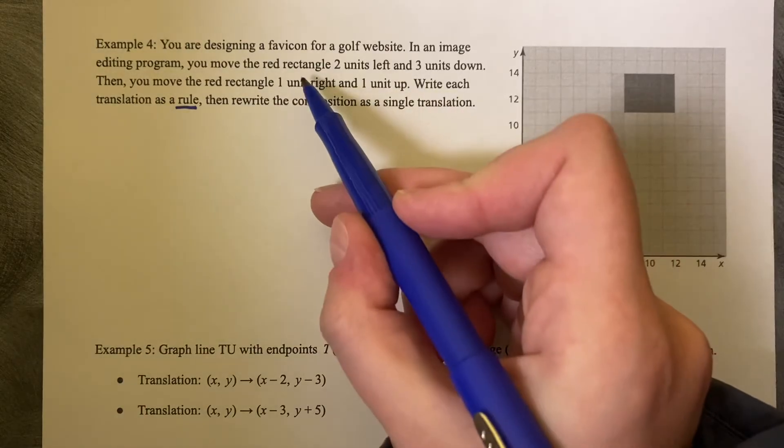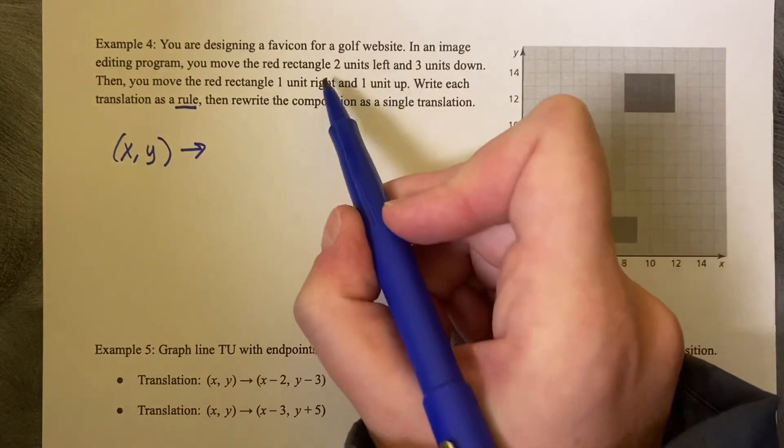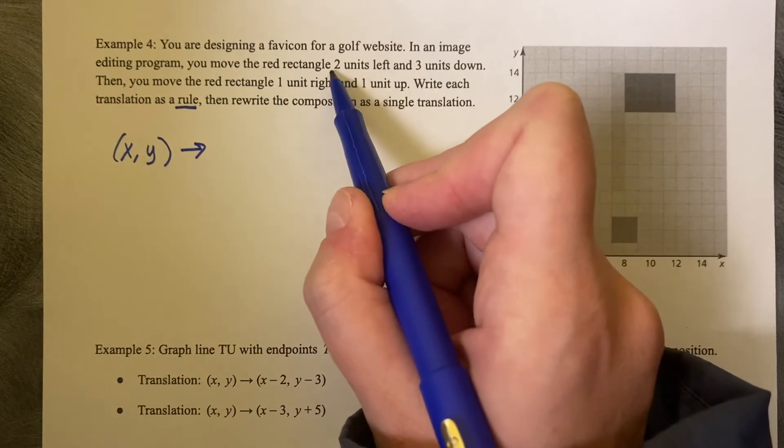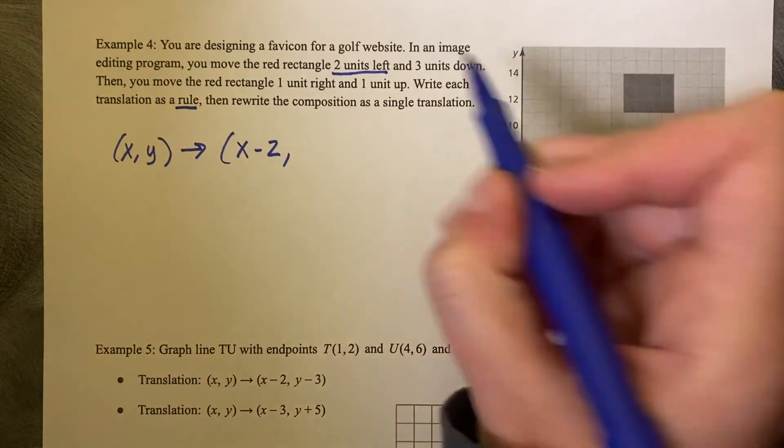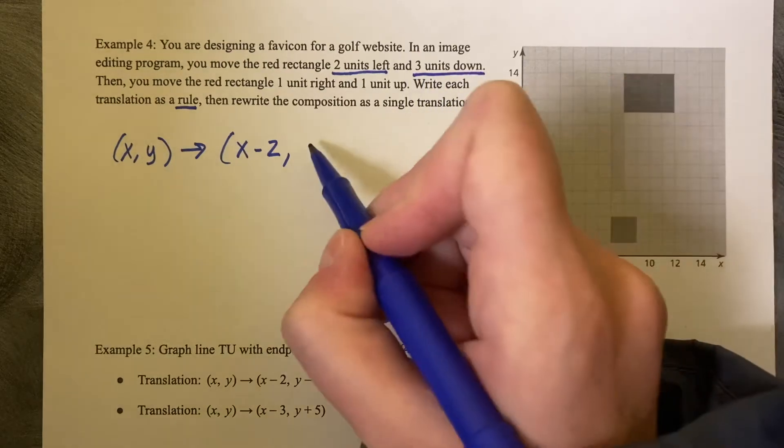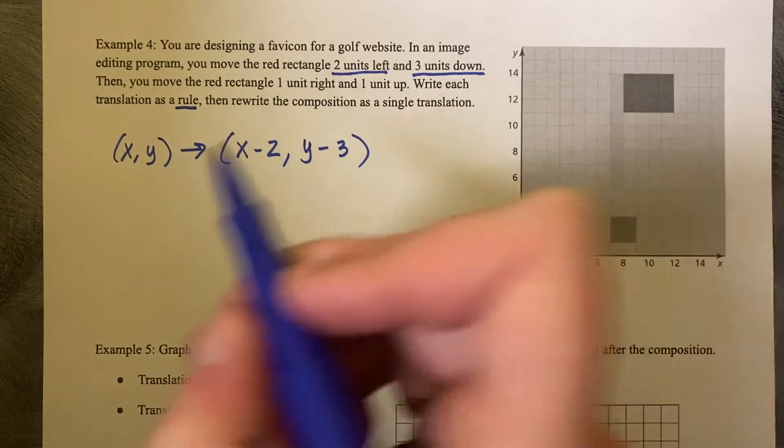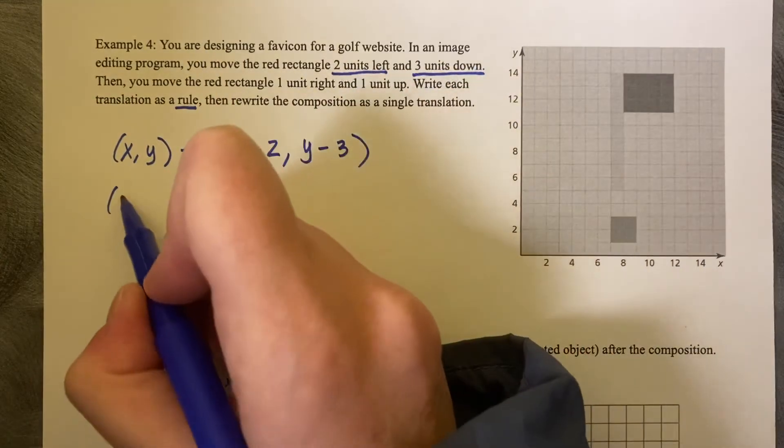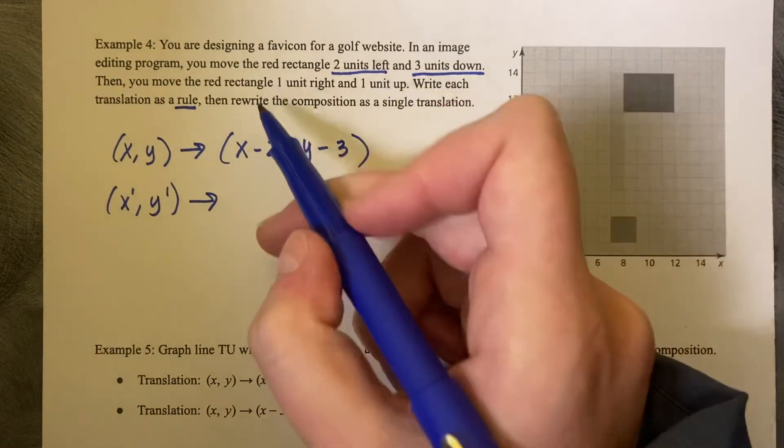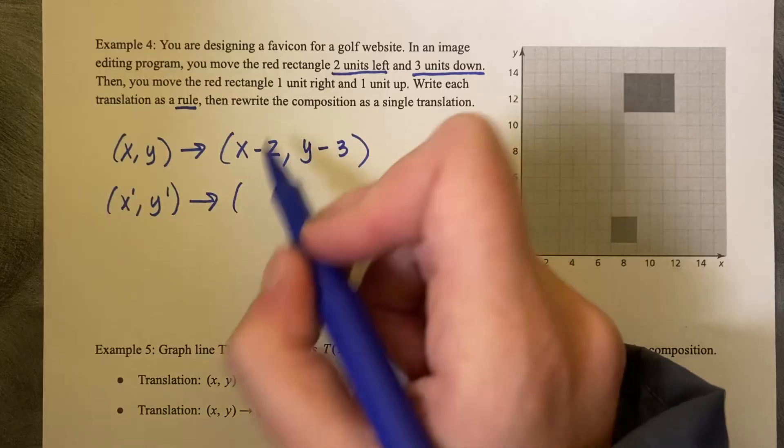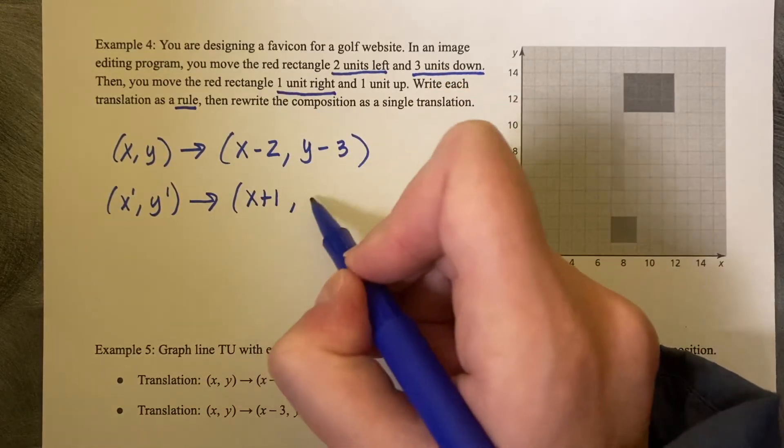So let's start here. So we want to go from (X, Y). We'd like to move the red rectangle two units left, so it's going to be X minus 2, and three units down, Y minus 3. Then for our prime, so we're going to do our (X prime, Y prime). We'd like to move the red rectangle one unit right and one unit up.